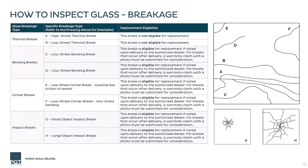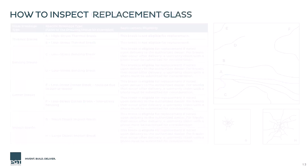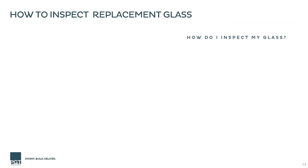As an example, you might see a thermal break like the one shown with line A. Looking at the table, we see that the only type of break not covered are thermal breaks — therefore, that glass would not be eligible. Bending, corner, and impact breaks are eligible for replacement if they are noted upon delivery. Consideration for replacement is also permitted with the submittal of a warranty claim with a photo noting the breakage occurred after the unit's delivery.